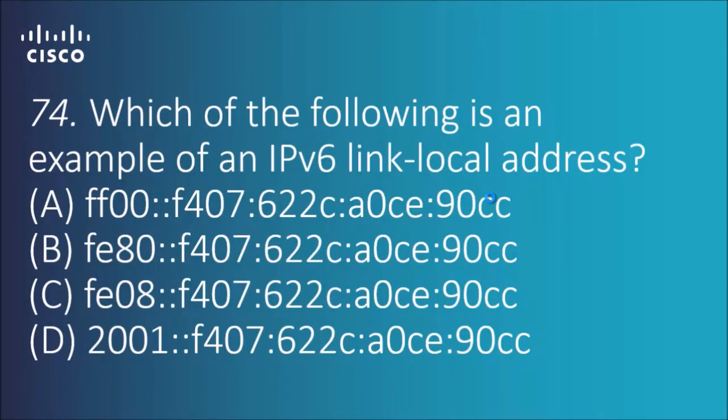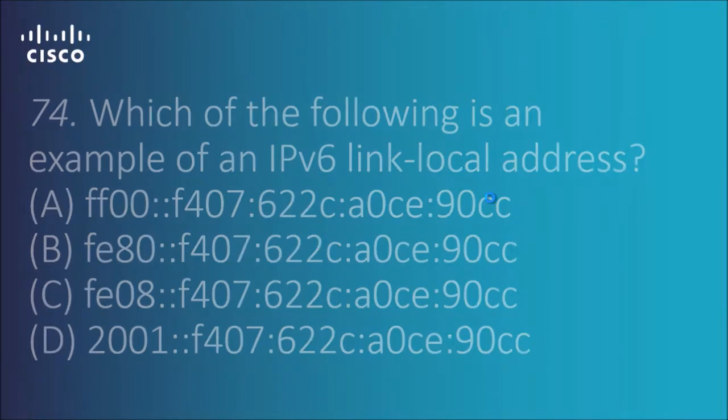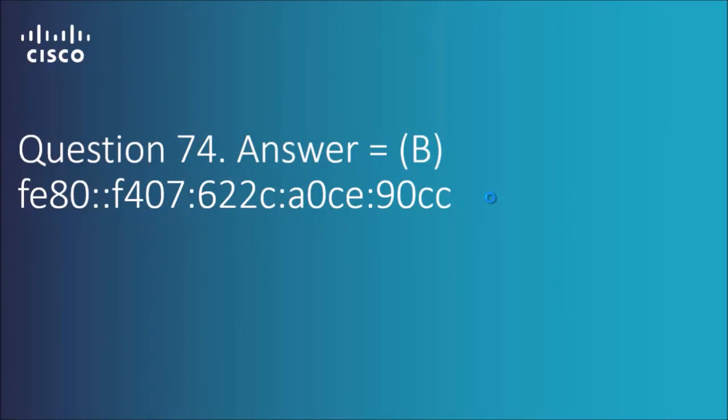Question 74: which of the following is an example of an IPv6 link-local address? We've got four options here. My memory serves me correctly — the answer is B. Anything that starts with FE80 is a link-local address.